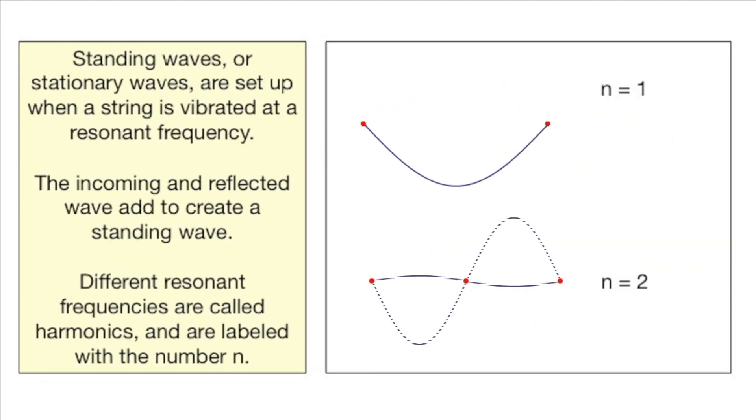Standing waves are created at resonant frequencies. At these frequencies, the incoming and reflected waves add constructively to create a standing wave. Different resonant frequencies are called harmonics. We label each harmonic with a number n.